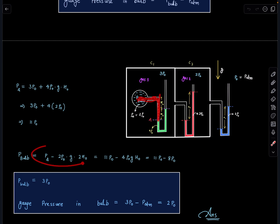When I simplify this, p_a value is known to us and this is 4 rho naught g h naught which is 8p naught. So simply on simplifying we are getting p bulb as 3p naught and similarly gauge pressure in the bulb is 3p naught minus p atm which is 2p naught.